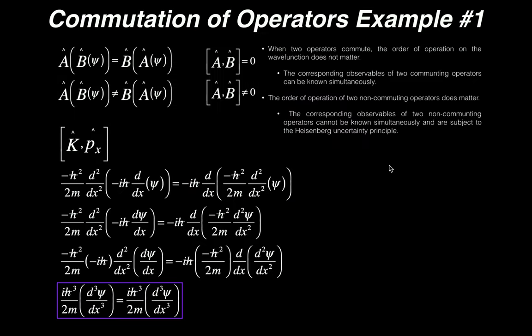In this video we're going to do an extension of the Heisenberg uncertainty principle. You normally cover this at about halfway into quantum mechanics — determining whether or not two operators commute, sometimes called commutation of operators. We're going to do one example in this video and then a second example in the next video.